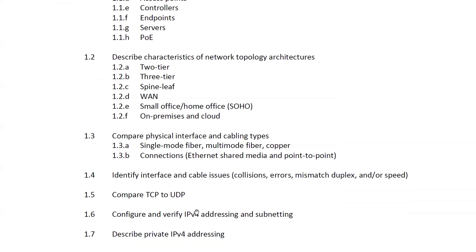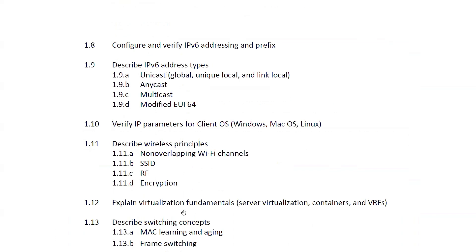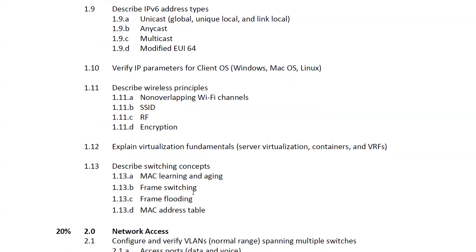You'll study TCP and UDP protocols, which are two important protocols for communication, along with IPv4 addressing, subnetting, and private IPv4 addresses. The next part covers IPv6 address types and how to verify IP parameters on different operating systems. There's also a wireless section covering RF, non-overlapping Wi-Fi channels, SSID, encryption, and wireless security protocols, plus virtualization fundamentals.